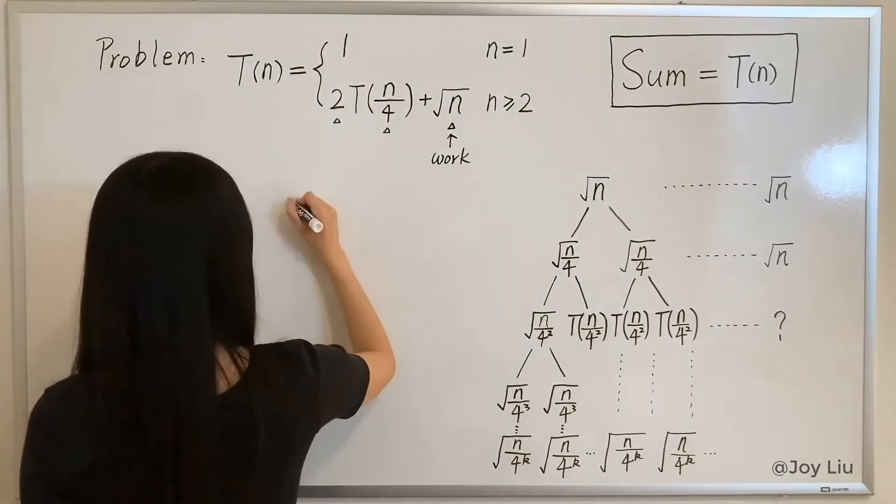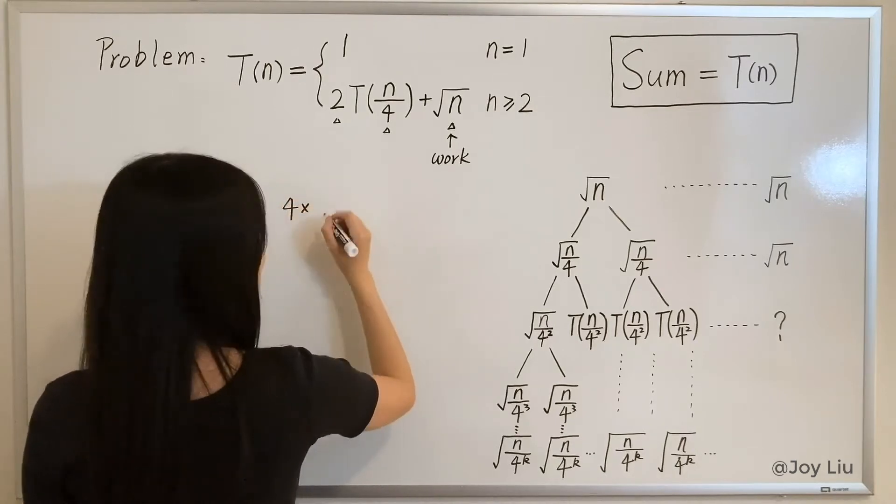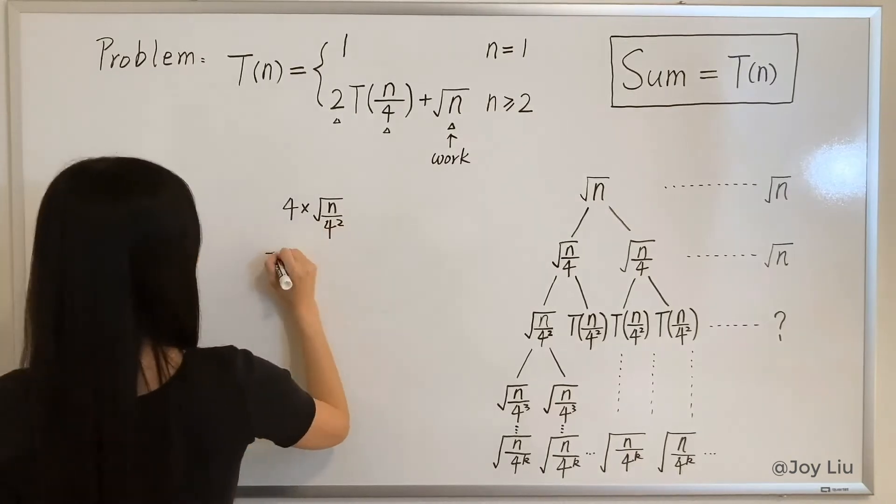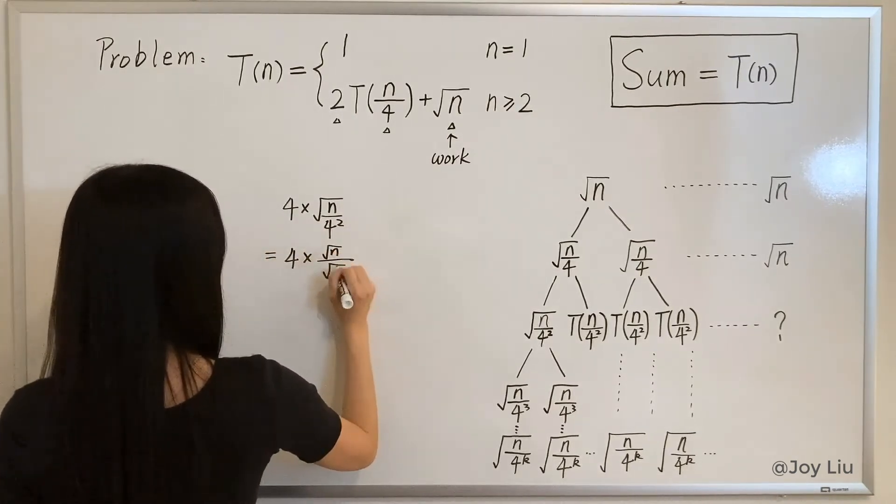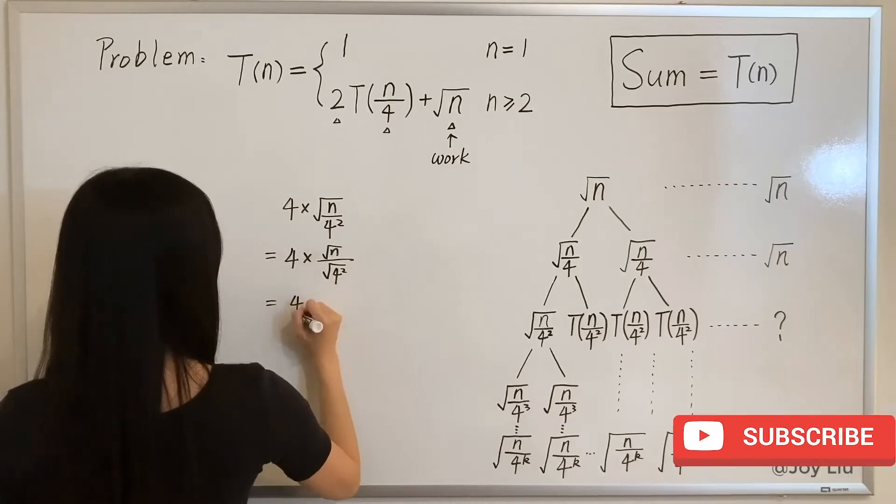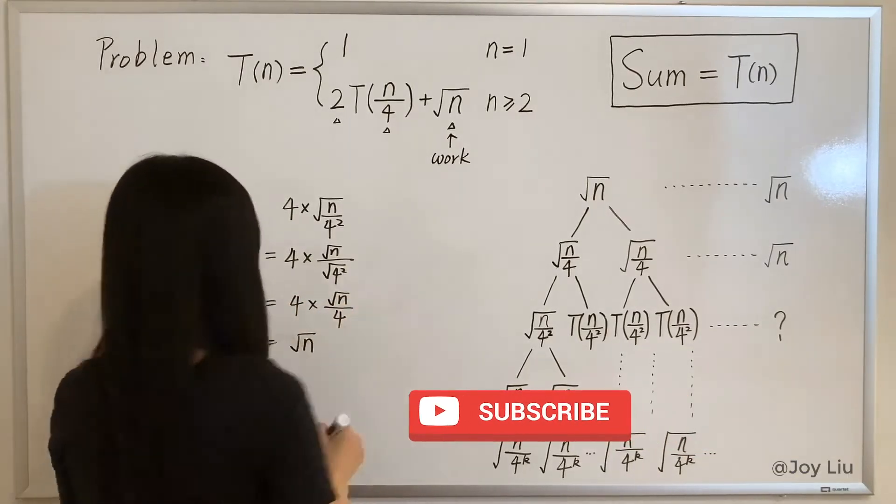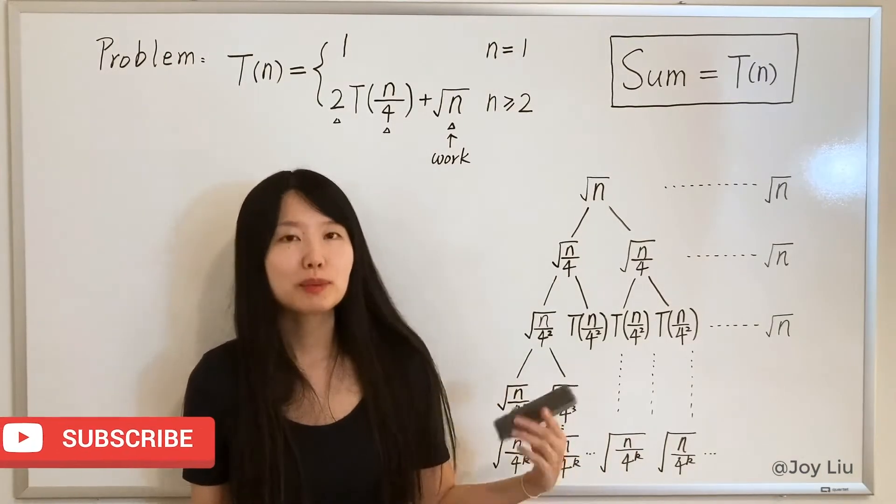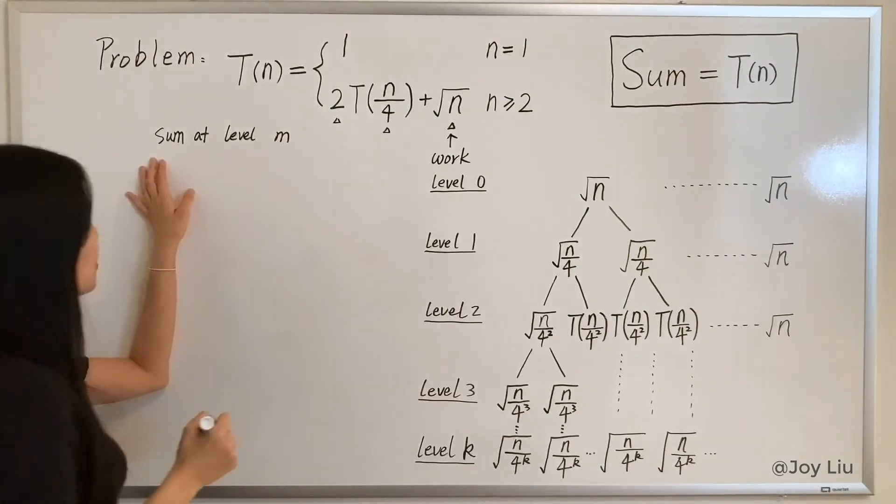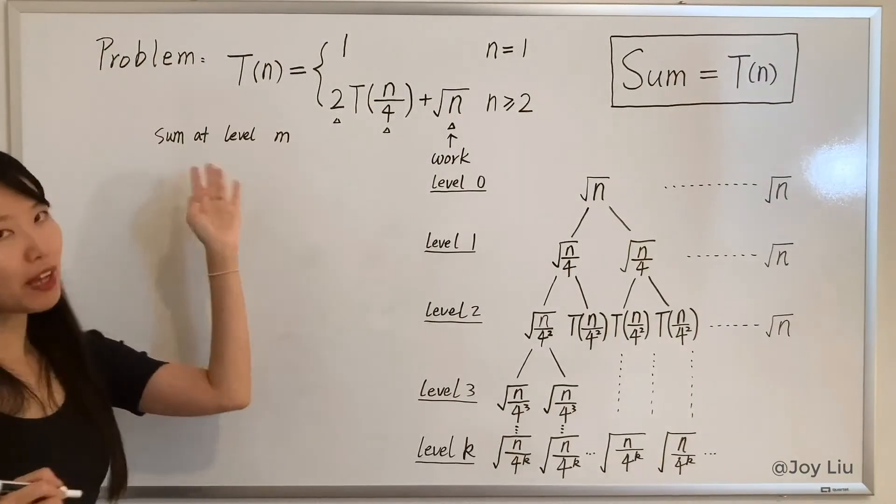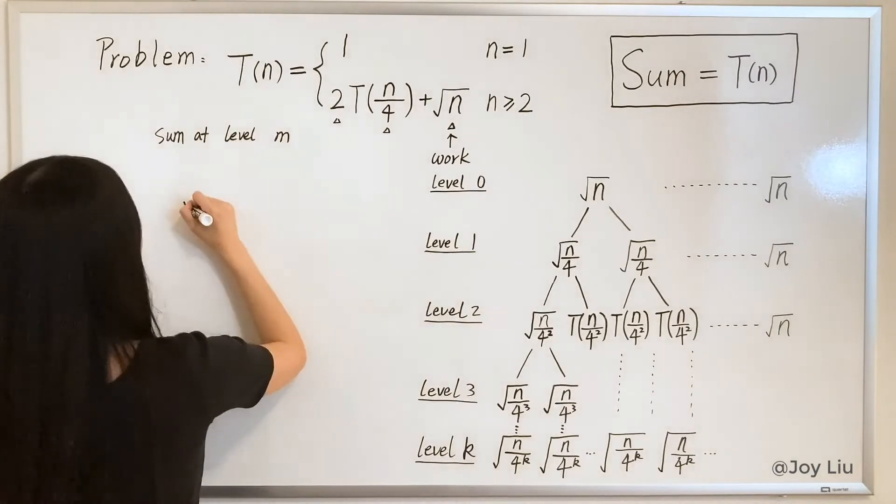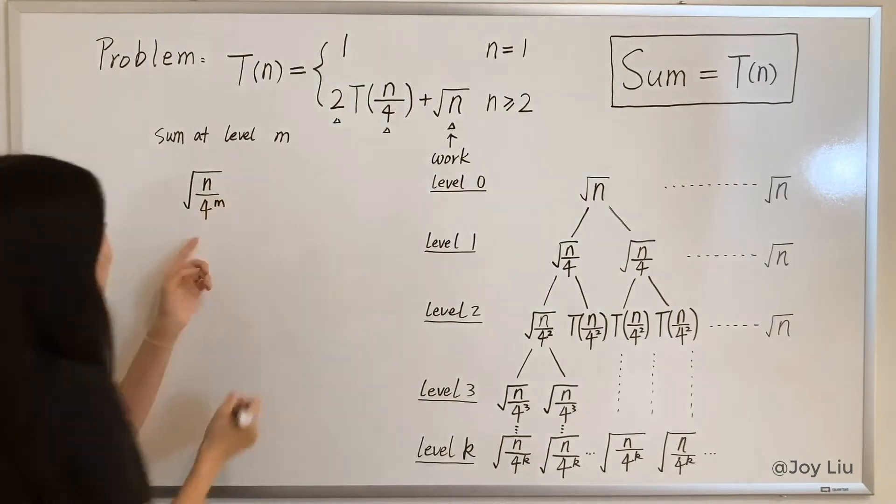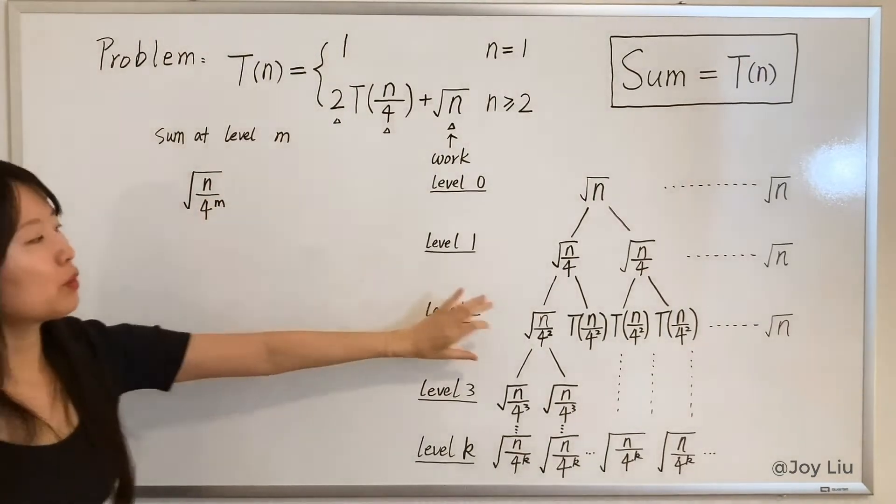Let's try it. It will be 4 times this. It's still square root of n, it's the same. And if you try the next level it'll be the same. And I can tell you why. Let's say we want to calculate the sum at level m. If you see the pattern, it would be square root of n divided by 4 to the m, that would be what will show up here for level m.